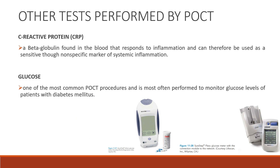C-reactive protein (CRP) is a beta-globulin found in the blood that responds to inflammation and can be used as a sensitive, though non-specific, marker of systemic inflammation. Glucose is one of the most common point-of-care testing procedures and is most often performed to monitor glucose levels in patients with diabetes mellitus.